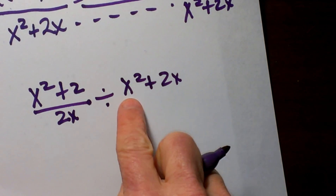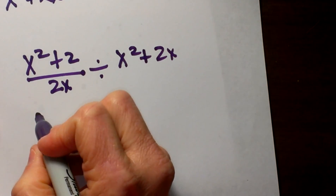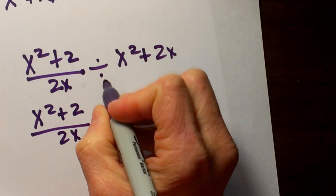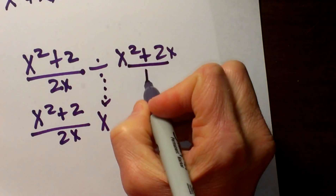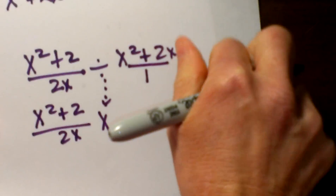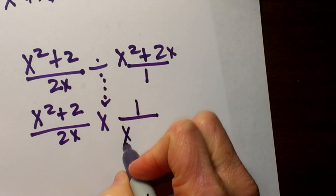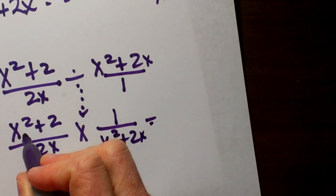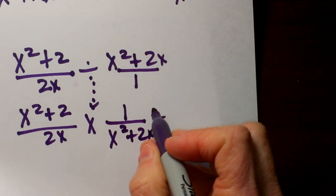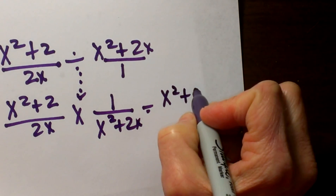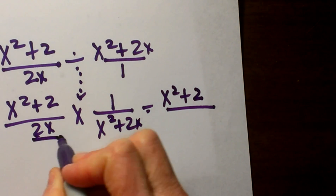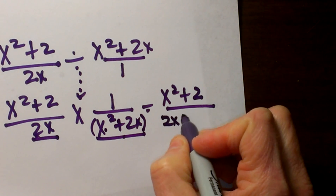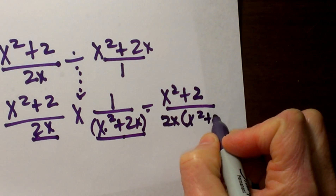Now I am going to use the keep it, change it, flip it rules even though we have variables. I keep the first term, change this to multiplication, and flip the second one. Any time you don't have a fraction, stick a 1 under it — then flip it — giving me 1 over x squared plus 2x. Now I can multiply across. So x squared plus 2 times 1 is just x squared plus 2, and on the bottom I have 2x times the binomial x squared plus 2x.